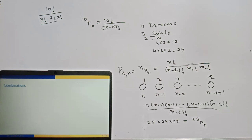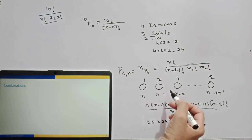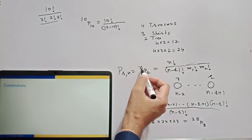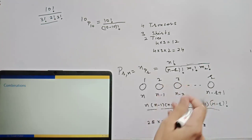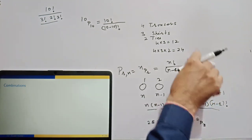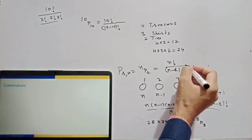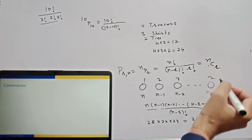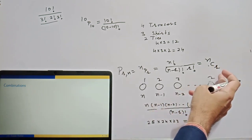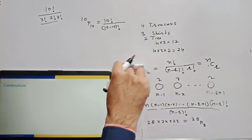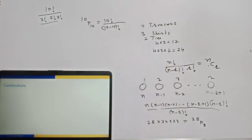Next, combinations. In combinations you do the same thing, but this time the arrangement doesn't matter — the order doesn't matter. So R things are alike, meaning permutations of N things taken R at a time where these R objects are identical. You divide the earlier expression for permutations by R factorial. This gives you the case of combinations, denoted NCR.